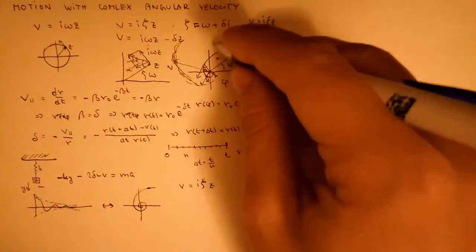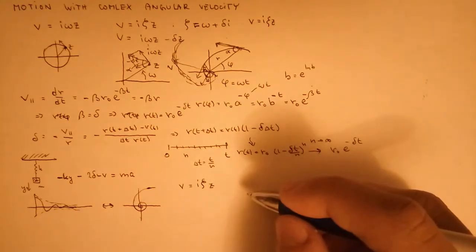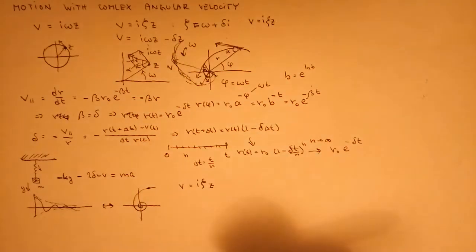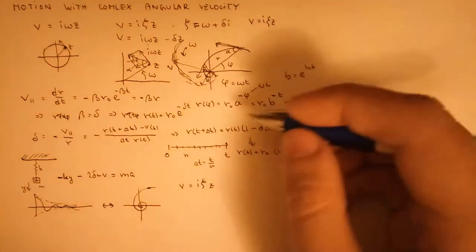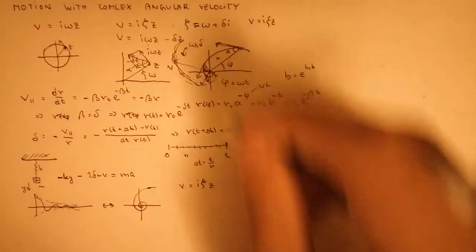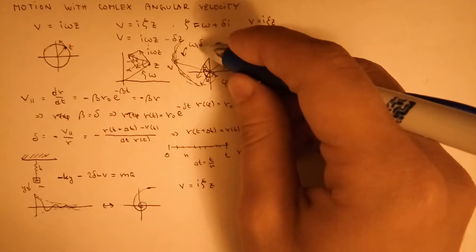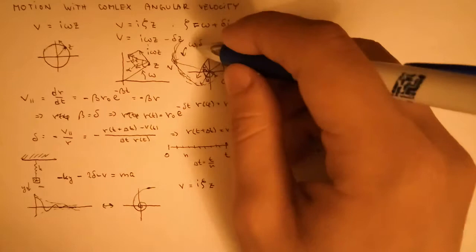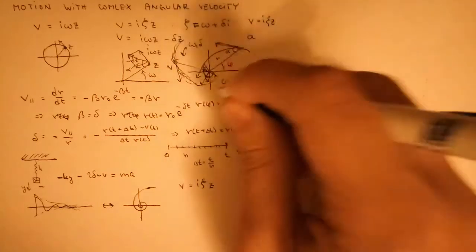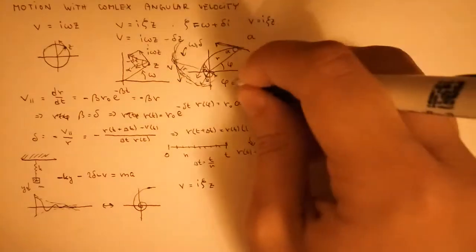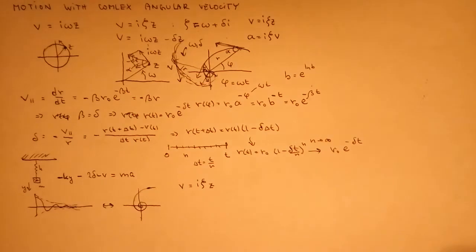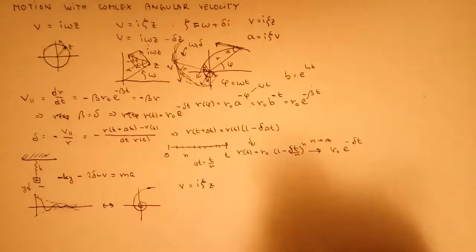Moreover, because this angle is constant the angular velocity is the same, and due to self-similarity and the same ratios of r and v at the same times, the damping constant delta is also the same. So the acceleration satisfies a = i*zeta*v — the same equation as before. This is analogous to the circular case where a = i*omega*v.